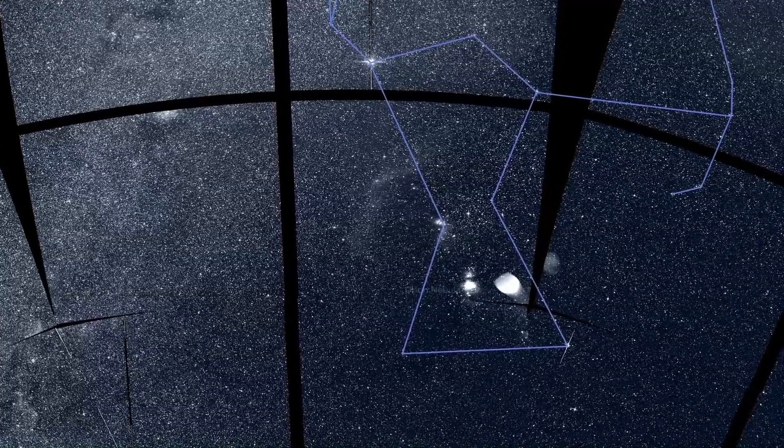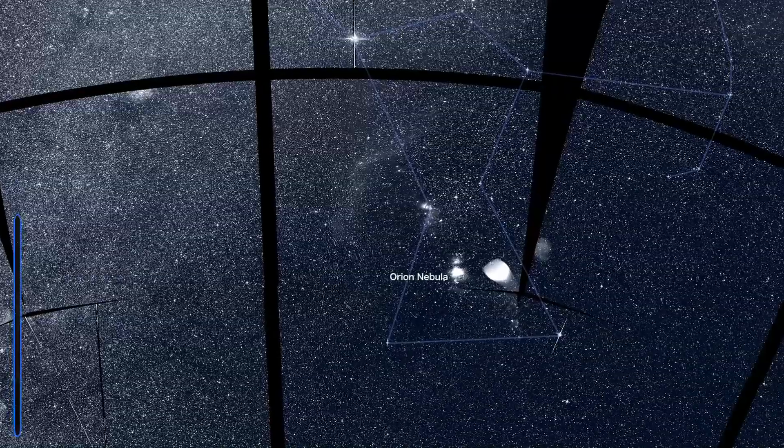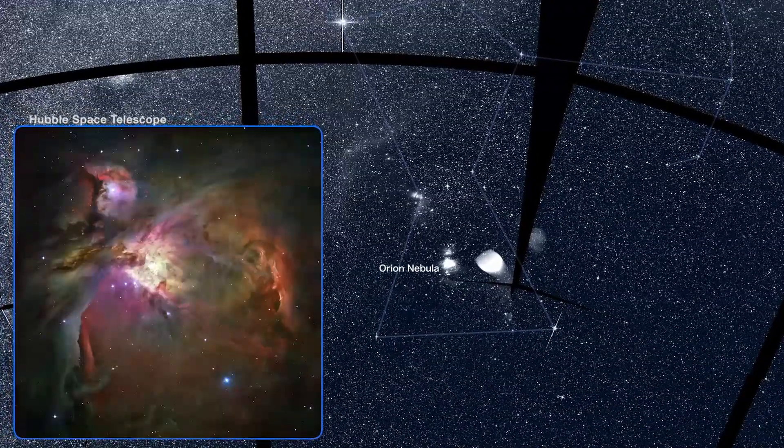The Orion Nebula, a vast nursery where stars are born, was imaged in great detail by the Hubble Space Telescope.